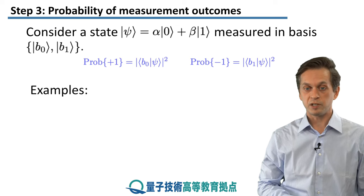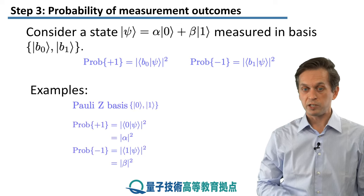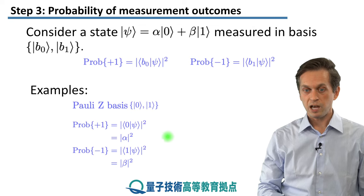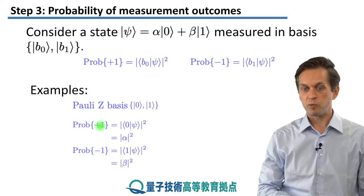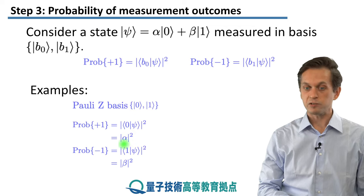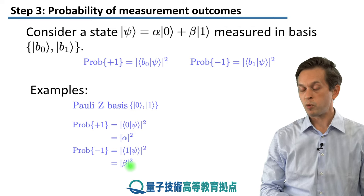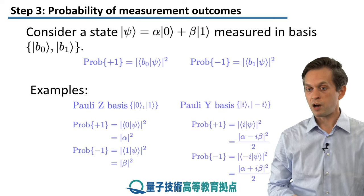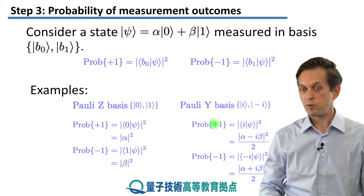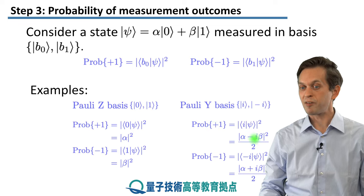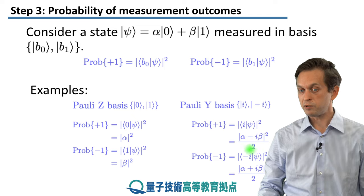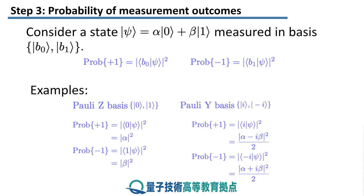To illustrate with simple examples: measuring in the Pauli z basis, the probability of outcome +1 is given by mod alpha squared, and the probability of −1 is given by mod beta squared. Measuring in the Pauli y basis, the probability of +1 is given by |alpha minus i·beta|² divided by 2, and the probability of the −1 outcome is given by |alpha plus i·beta|² divided by 2.